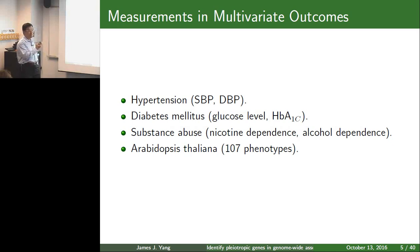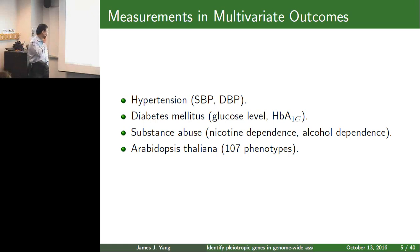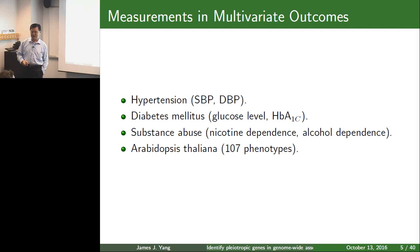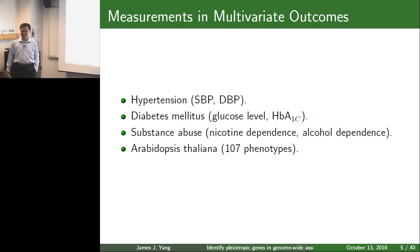For diabetes, you usually measure glucose level or HbA1c. In the last study I'm working on — substance abuse like nicotine dependence or alcohol dependence — they already designed a questionnaire with about six questions asking the patient to respond about symptoms, like how many cigarettes you smoke. So this one is about six to ten phenotypes. For another study published in Nature in 2010, they studied thirteen and seven phenotypes together. So you can have from two to 100 phenotypes depending on your study. It's very common to have about six to ten outcomes.